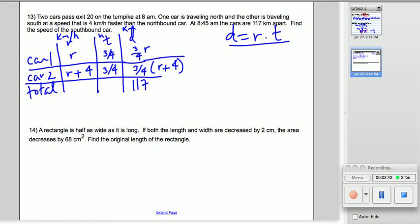Now, we need an equation. Well, we know that they were 117 kilometers apart after three quarters of an hour. That means when we add these two, we're going to get 117.